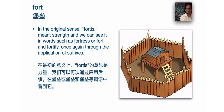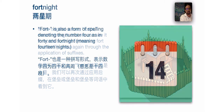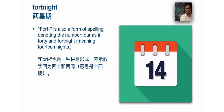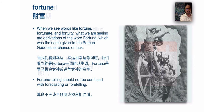Fort is also a form of spelling denoting the number four, as in forty and fortnight. A fortnight is a span of time of the length of fourteen nights — like two weeks, a fortnight.